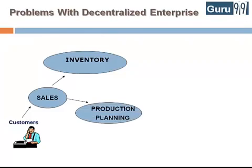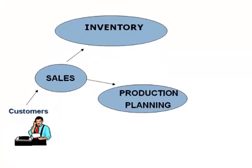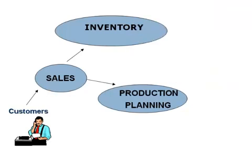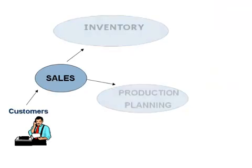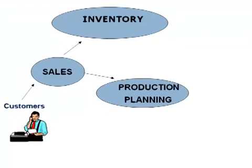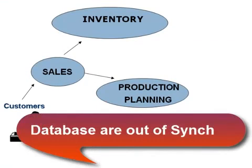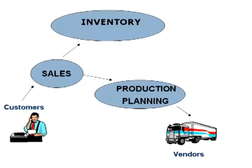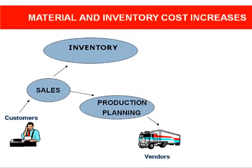leading to loss of revenue and customer dissatisfaction. Now, suppose the product is out of stock and the sales team approaches the production planning team to manufacture the product for future use. The production planning team checks the availability of the raw materials required. Raw material information is separately stored by production planning as well as the inventory department. Thus, data maintenance cost goes up. A particular raw material required to manufacture the product is available in the inventory, but according to the database of the production planning team, the raw material is out of stock. So they go ahead and buy the raw material. Thus, material as well as inventory costs go up.